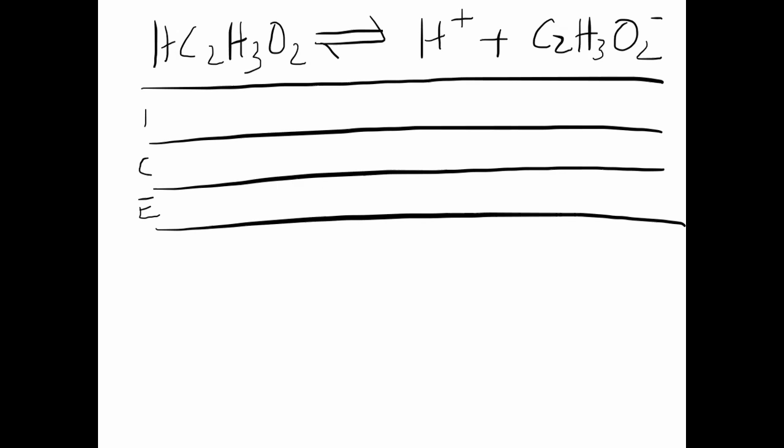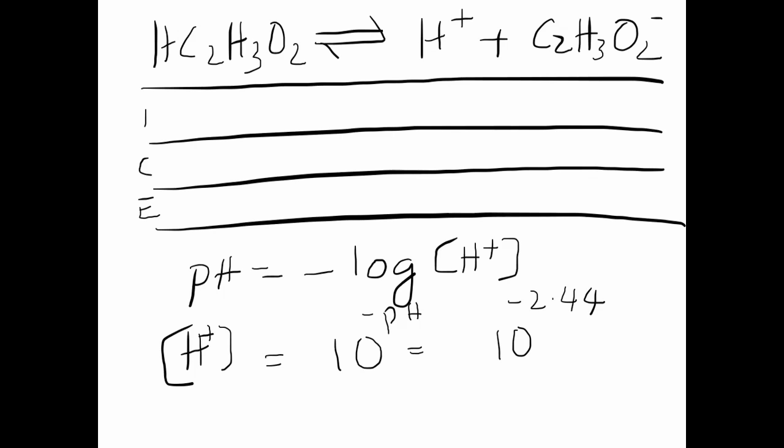In order to calculate the pH, we know pH equals negative log [H+], or [H+] equals 10 to the negative pH, that's going to be equal to 10 to the negative 2.44, and this is equal to 0.0036 M.